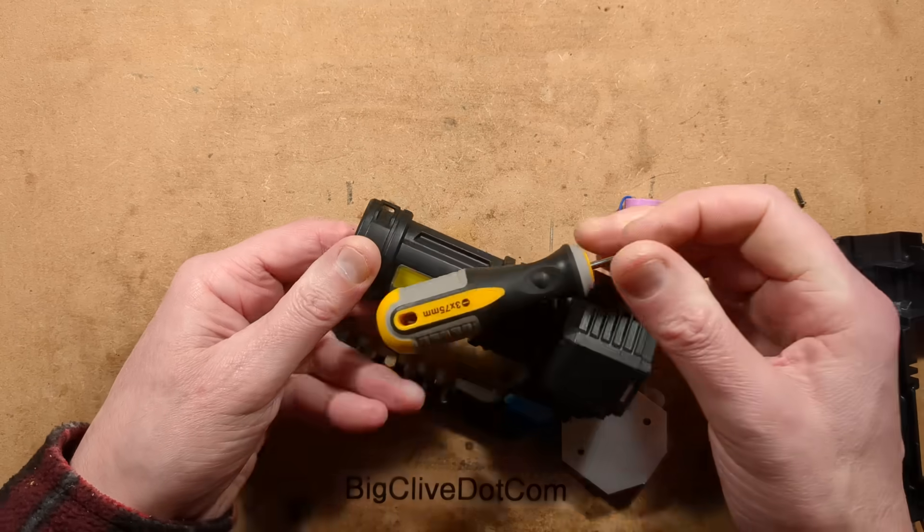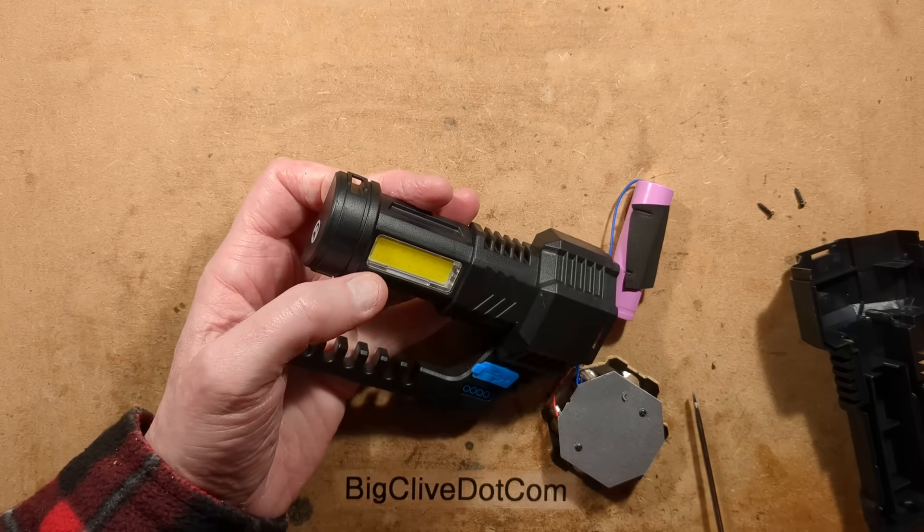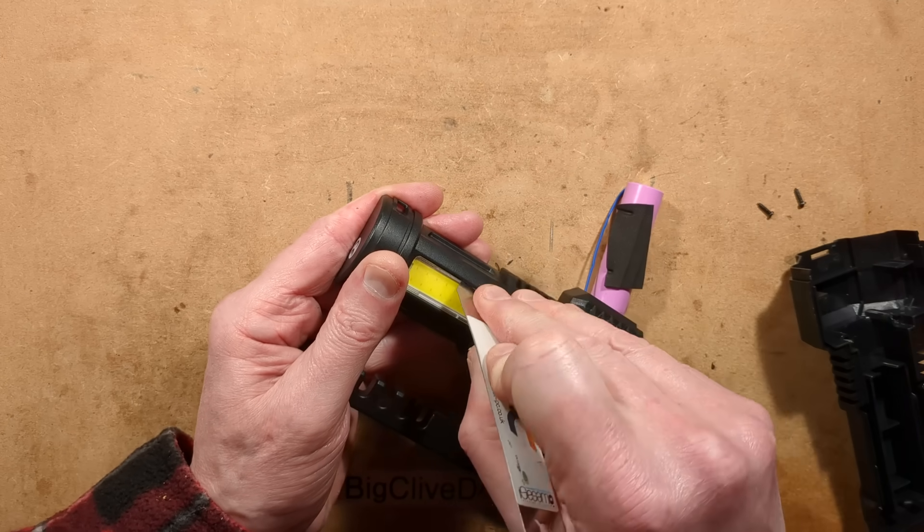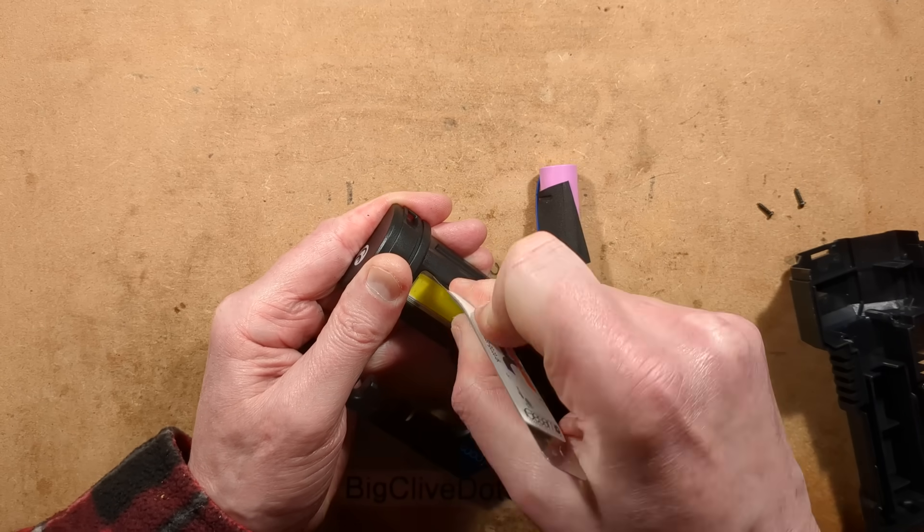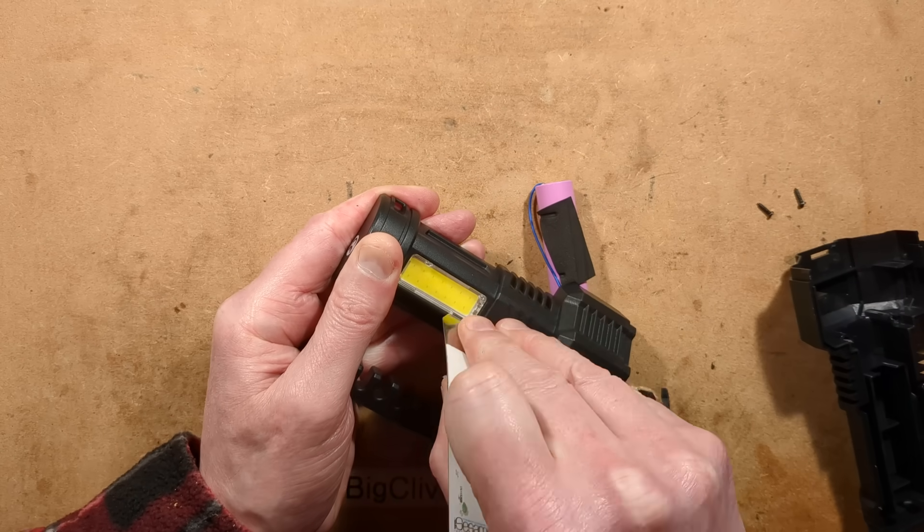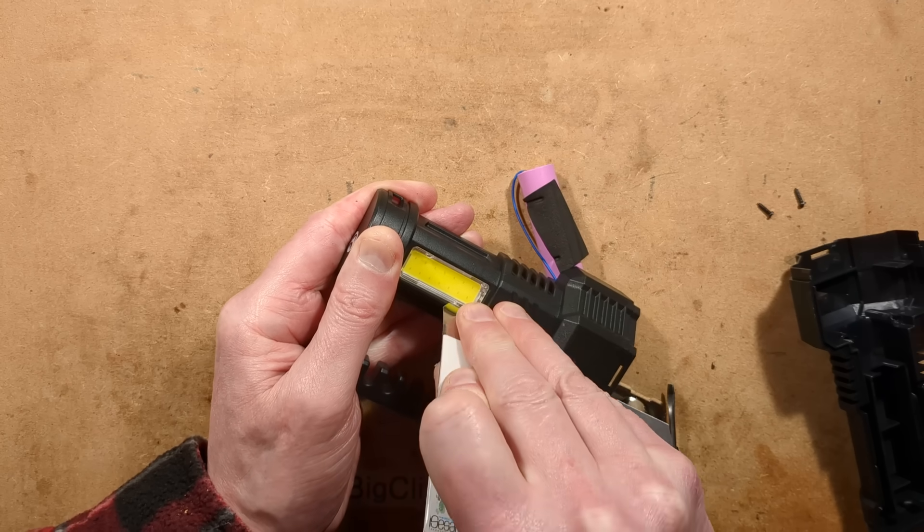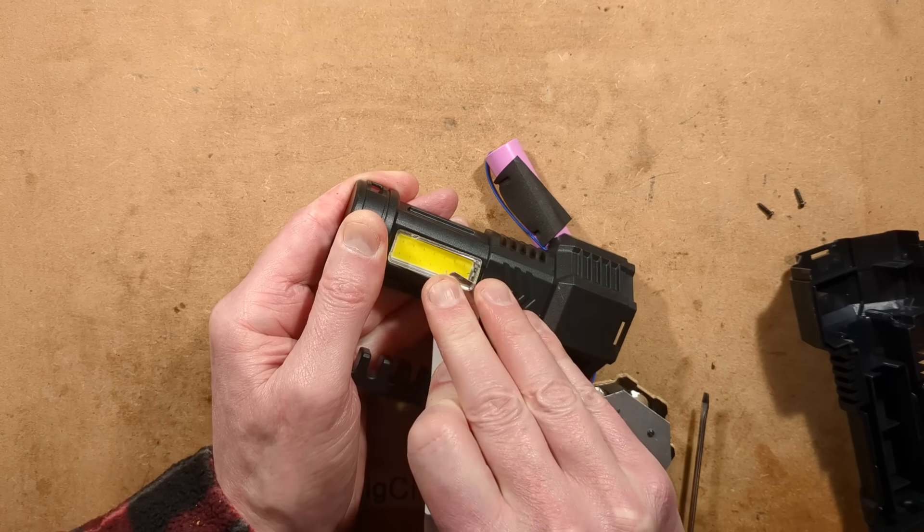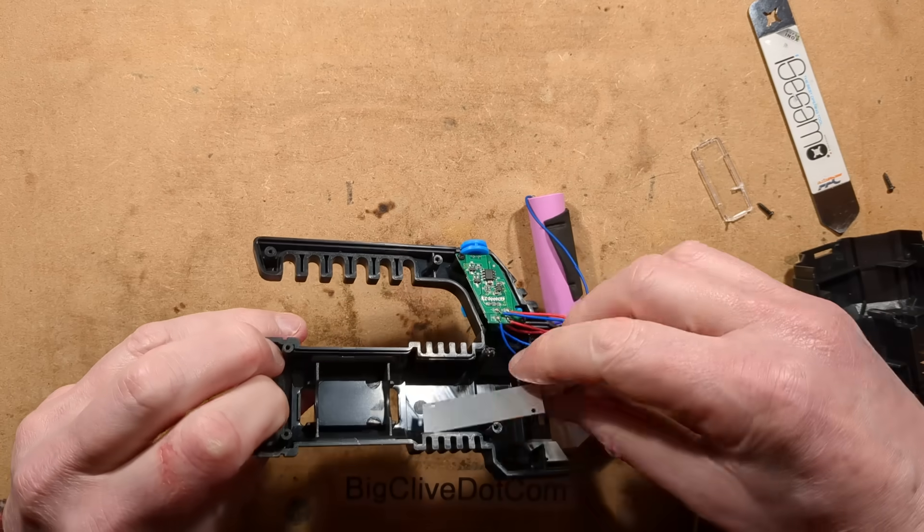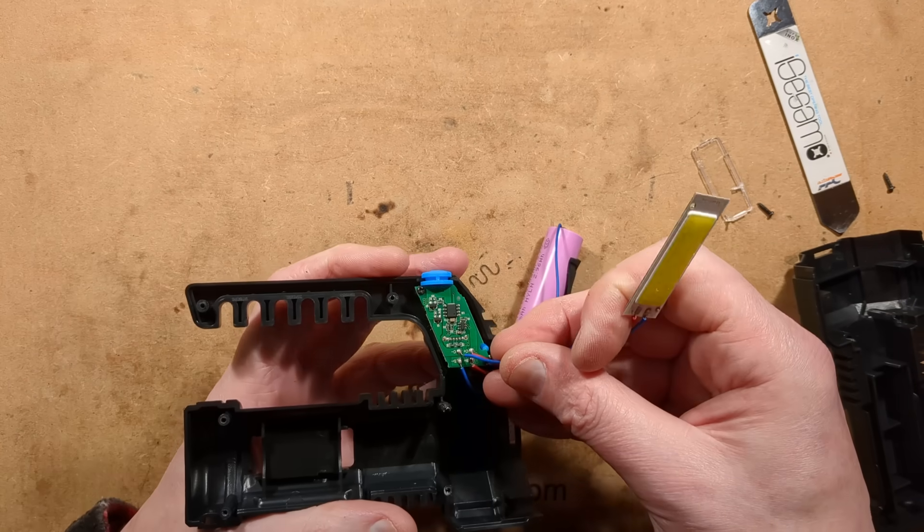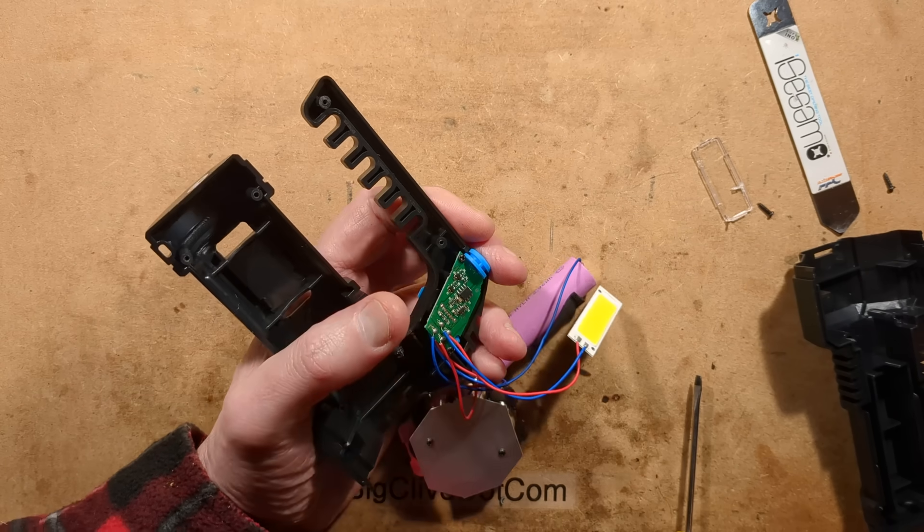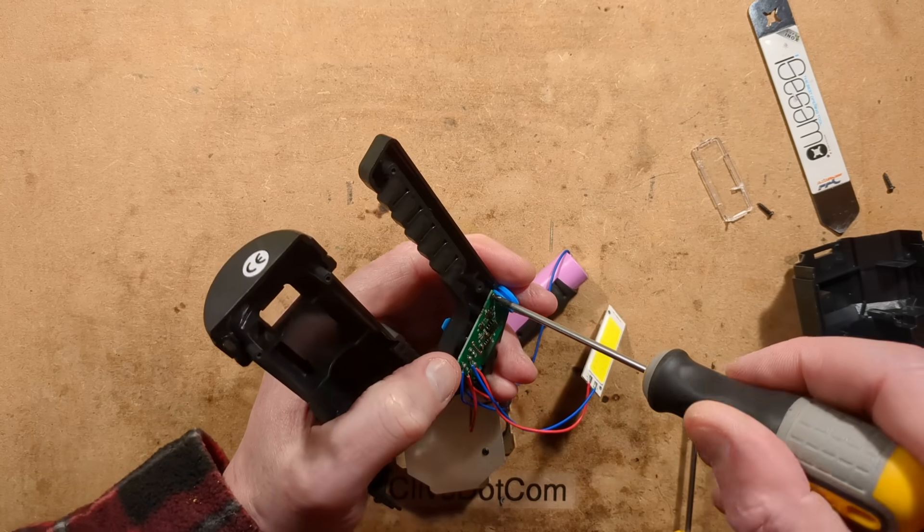So if I push, unclip the... Hold on. Where is the spudger? Tools everywhere. This has been a very destructive opening. Yeah, this isn't a good opening at all. It's very, very destructive. But to be honest, that's fine. So the COB is held in place by that. Is there a screw in this circuit board? There's a couple of screws in this circuit board. Let's see if we can get them out without destruction.